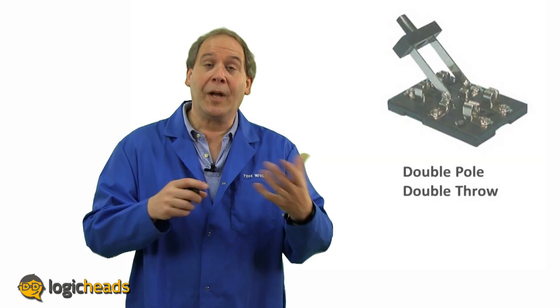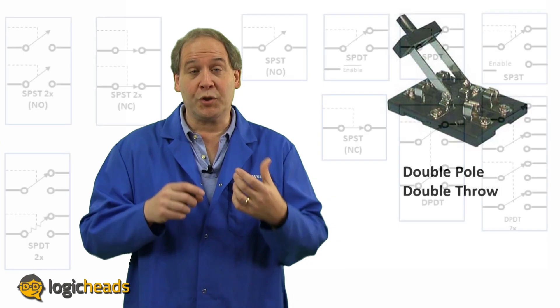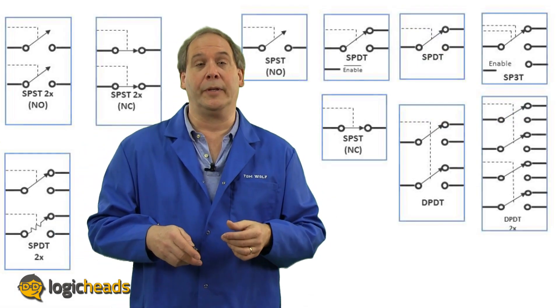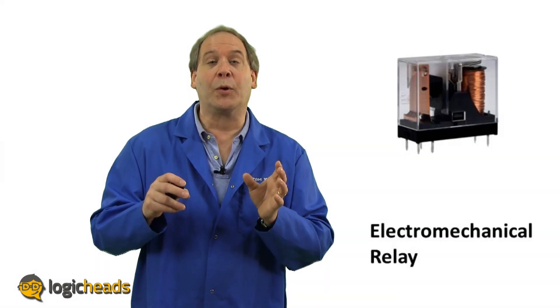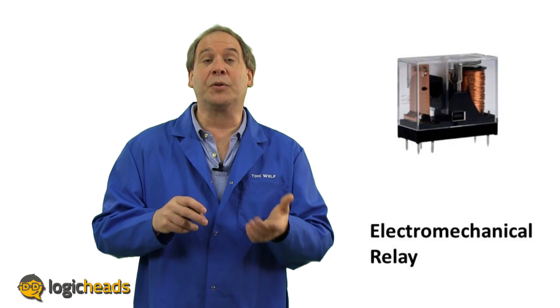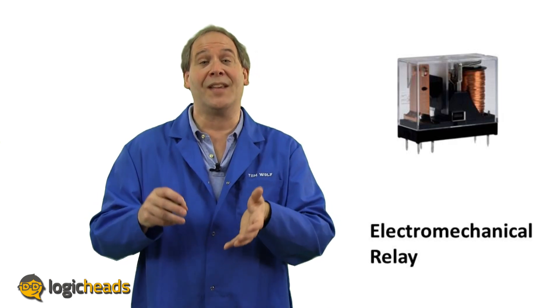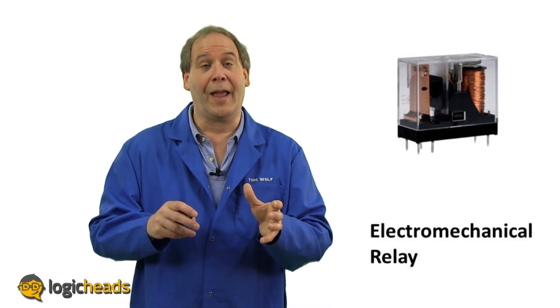Or how about a double pole, double throw switch, which has two poles, each of which can route in two different directions. Or a whole host of other throws and poles which have been developed over the years. But mankind, being lazy, didn't want to spend all that effort to flip the mechanical switch, so he invented the electromagnetic relay, which with just a bit of electrical current would use a small electromagnet to switch itself, with all the same combination of throws and poles as the mechanical switch. And life was good again.